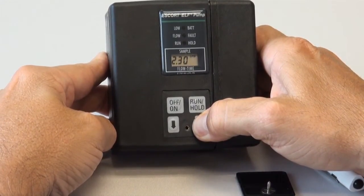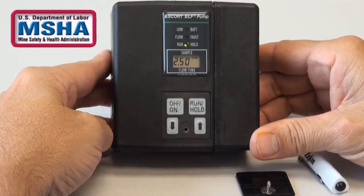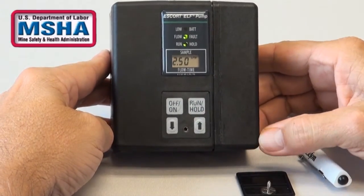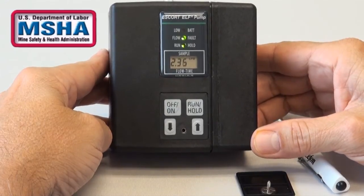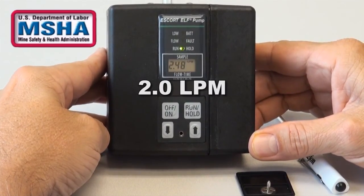If you are using the Escort Elf for the MSHA, or Mine Safety and Health Administration's underground coal mine dust sampling program, you will use a setting of 2.0 liters per minute.